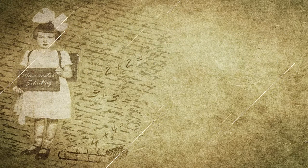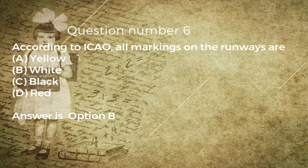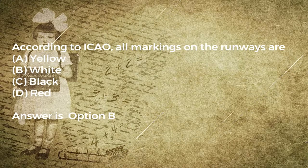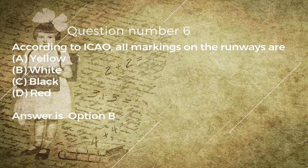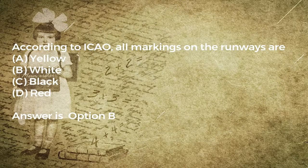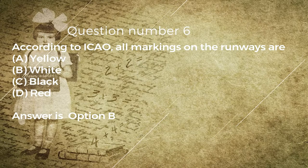Question number six: according to ICAO, all markings on the runways are: A) yellow, B) white, C) black, D) red. Answer is option B.